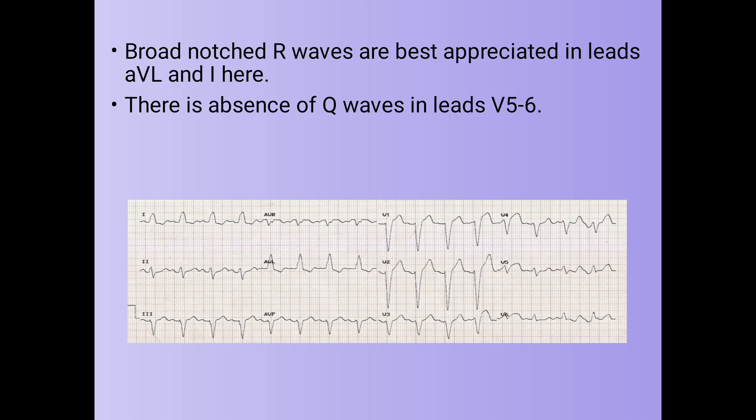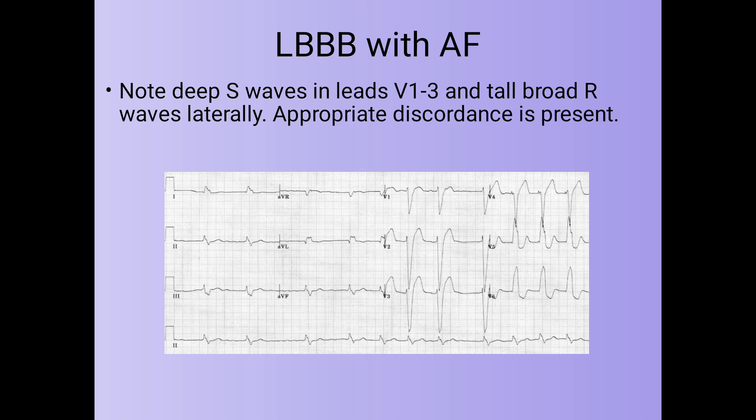In the ECG we can see broad notched R wave in lead aVL and lead 1, and absence of Q waves in V5 and V6. At times we see LBBB with atrial fibrillation — we can see deep S wave in V1 and V3 and tall R waves laterally in V5 and V6. This demonstrates appropriate discordance.